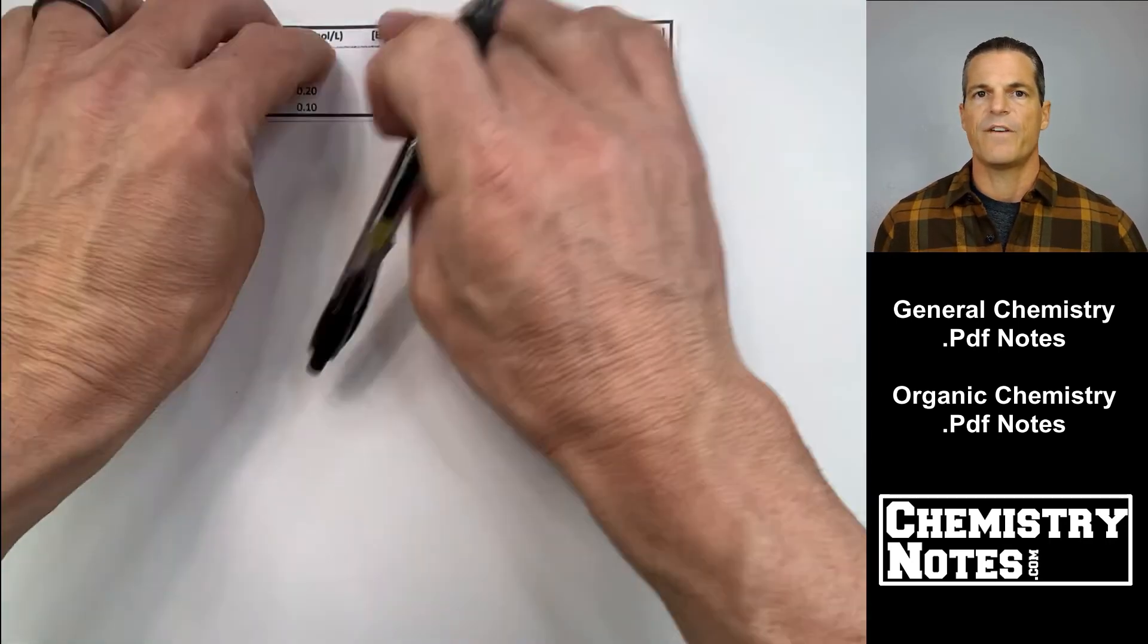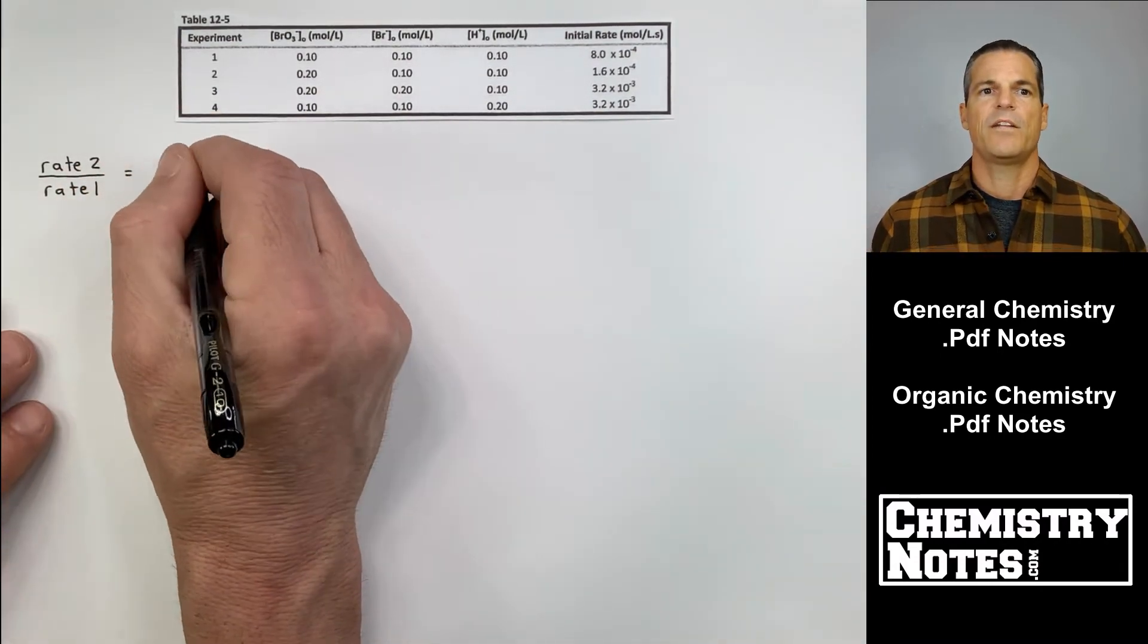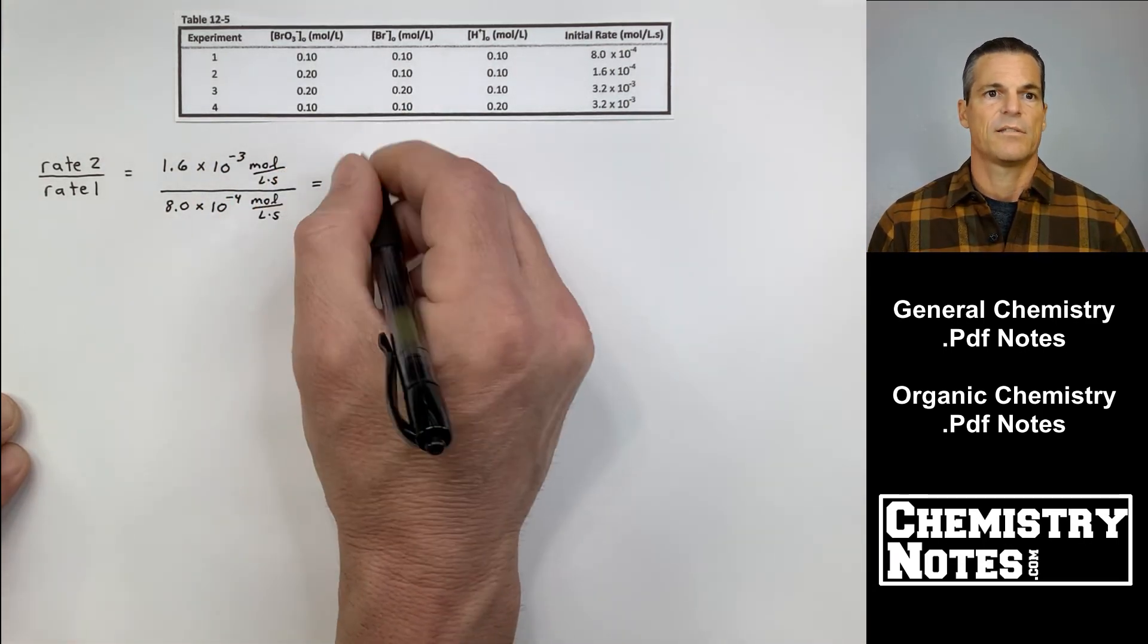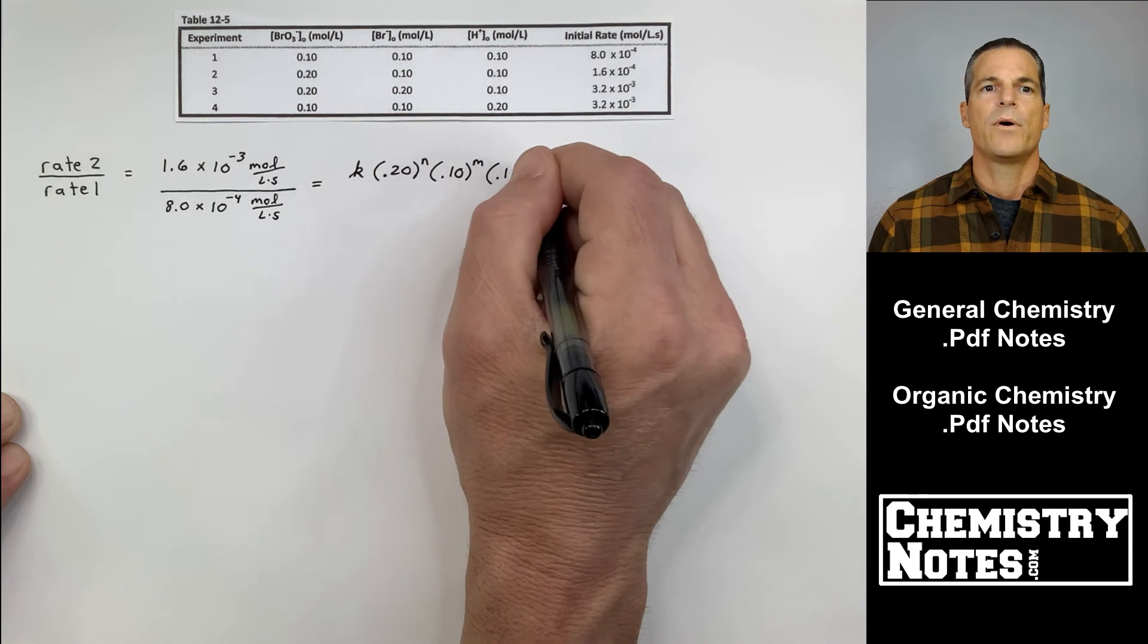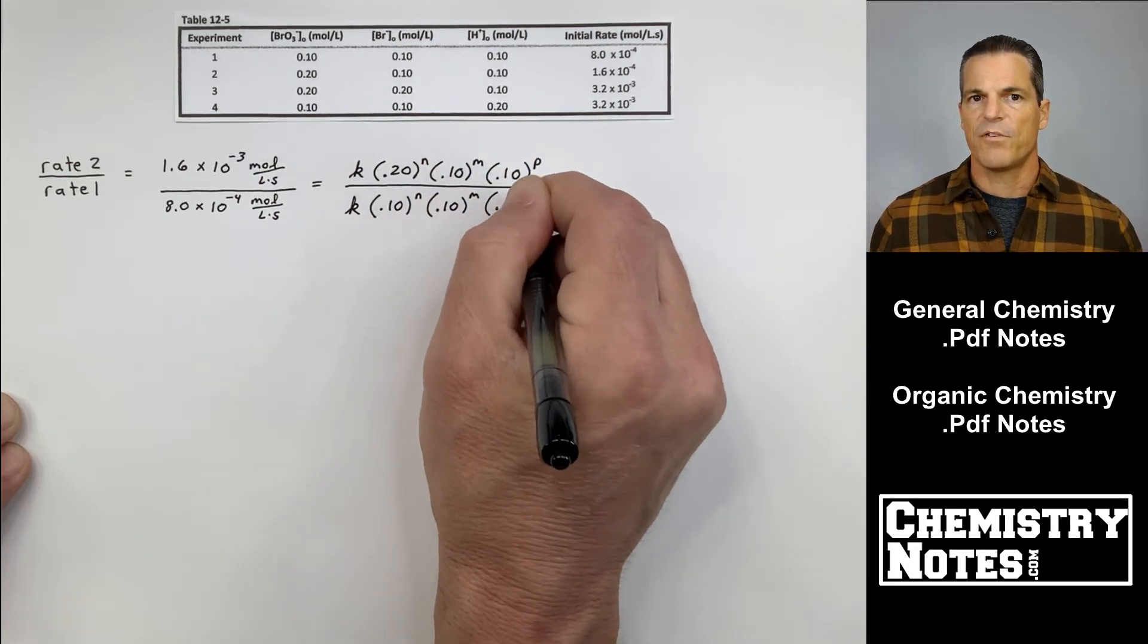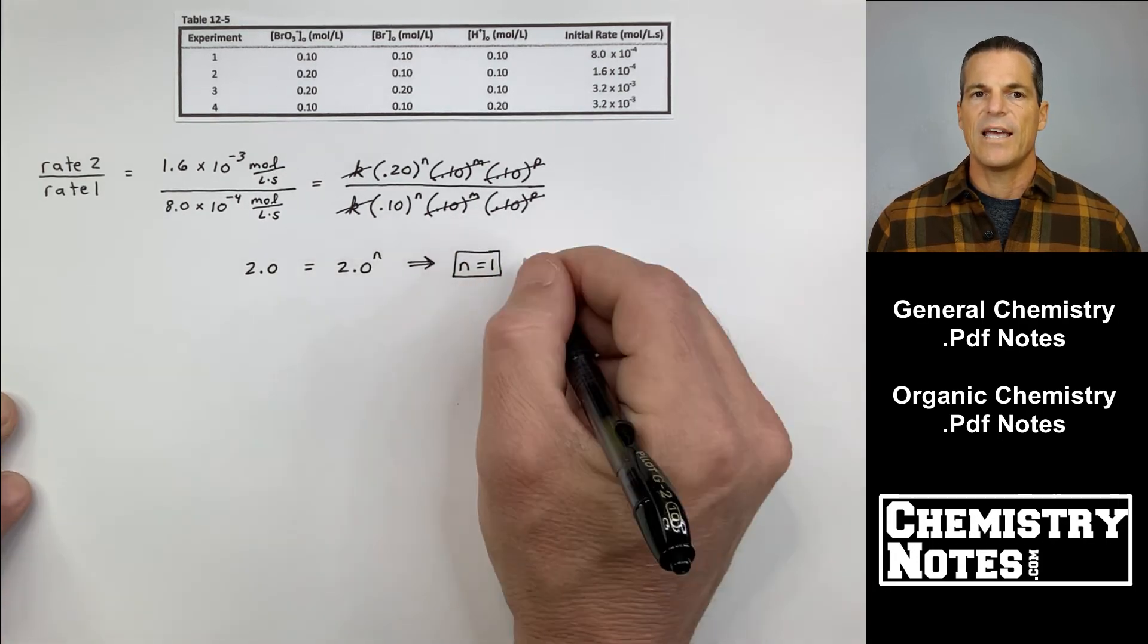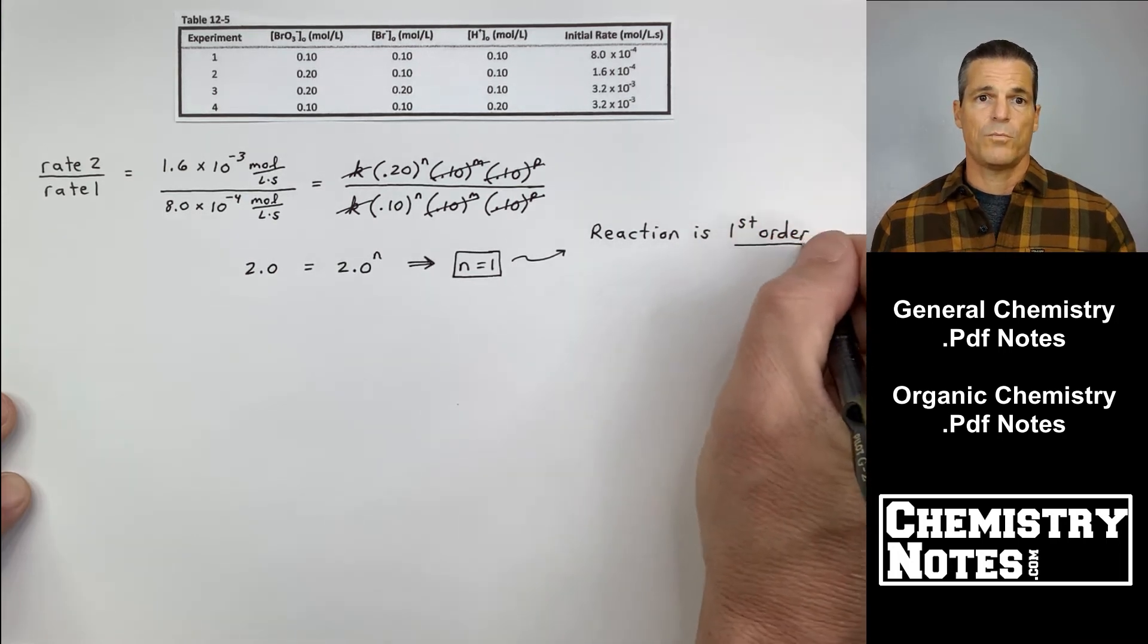I'm reposting table 12-5 so you guys don't have to stop, pause, and scroll up or down. Here is this same data table. If I do rate 2 divided by rate 1, I'm essentially dividing a rate law for experiment 2 divided by a rate law for experiment 1. Rate 2 over rate 1, and yes, I could have done rate 1 over rate 2. I got 1.6 times 10 to the minus 3 divided by 8.0 times 10 to the minus 4. I'm just plugging in for experiments 2 and 1.